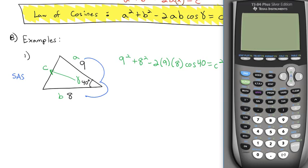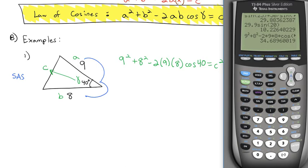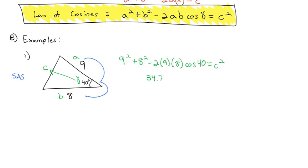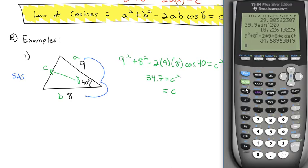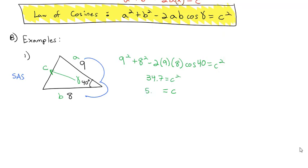We can type that entire expression into the calculator exactly as written: 9 squared plus 8 squared minus 2 times 9 times 8 times cosine of 40. Hitting enter gives approximately 34.7, so C squared equals 34.7. Taking the square root — using 2nd, square root of the previous answer — gives C approximately equal to 5.9. That missing side is 5.9.